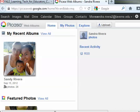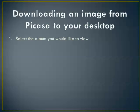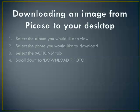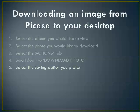Now let me go over a few more steps. The first thing I would want you to do is select the album you would like to view, then select a photo you would like to download. Select the Actions tab which is located on top, then scroll down to Download Photo. Once you've selected that, there's going to be a save options prompt — you can select any option or wherever you'd like to save it.